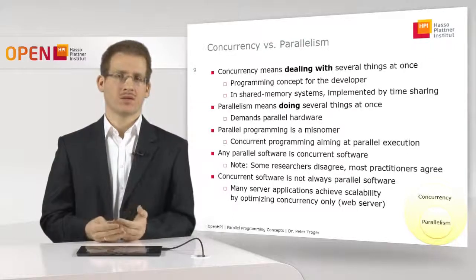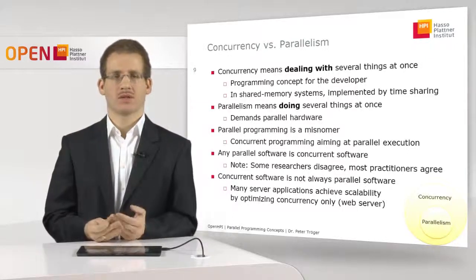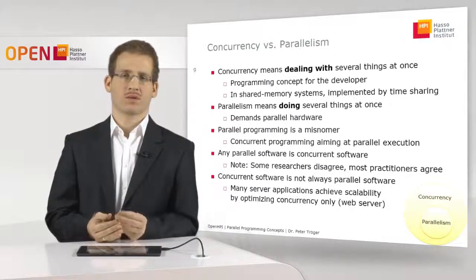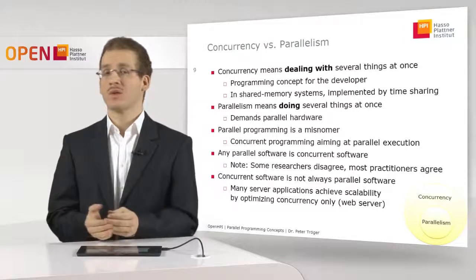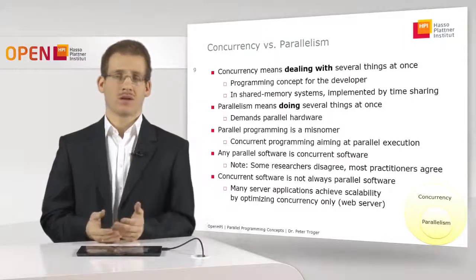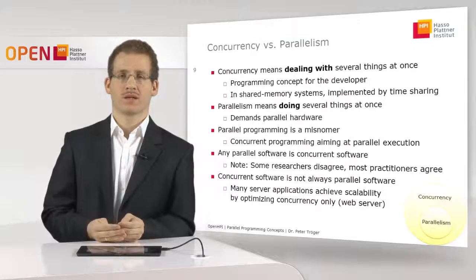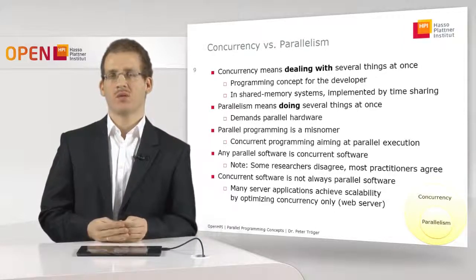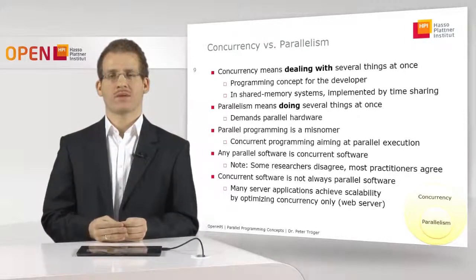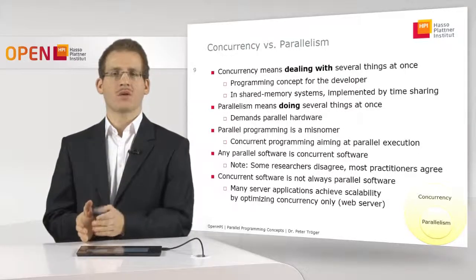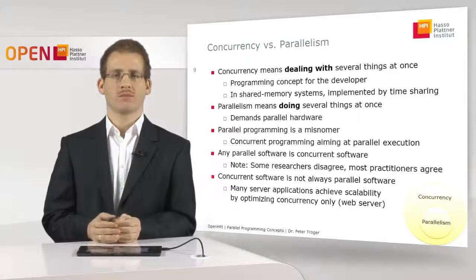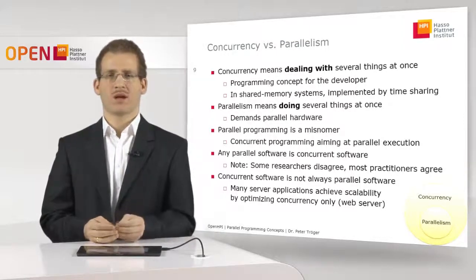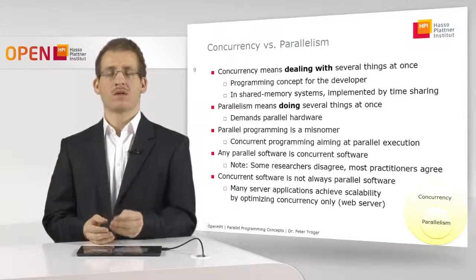With this understanding you could conclude that any parallel software is concurrent software — and this is what most practitioners agree upon, while some researchers hold a counter opinion, for which you'll find material in the optional readings for this unit. Concurrent software is not always parallel software: we can have the situation where software tries to run concurrently to optimize some performance characteristic, but that does not mean automatically that this software is prepared or designed to run on parallel hardware.